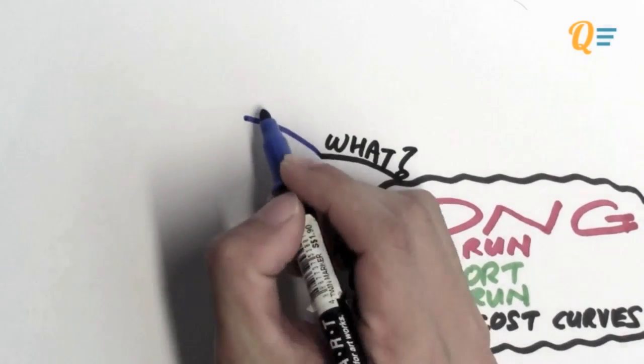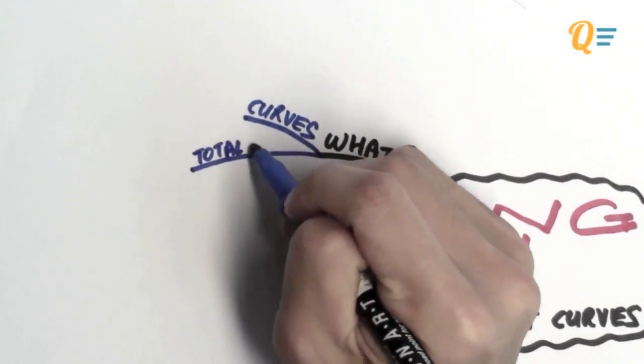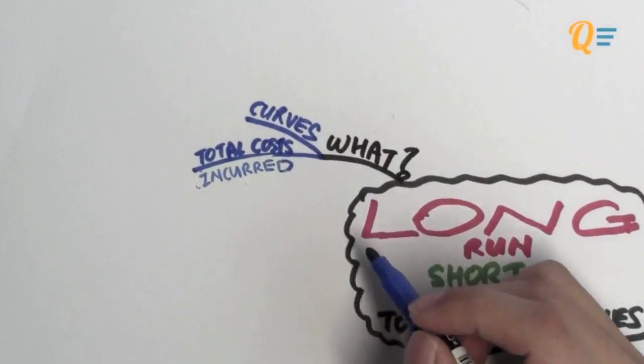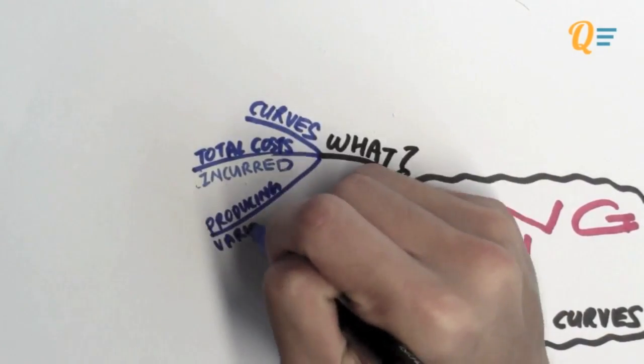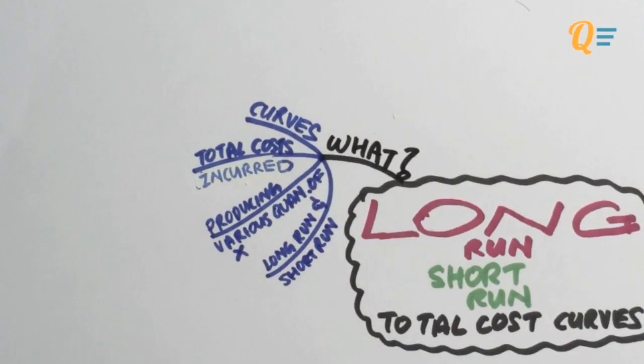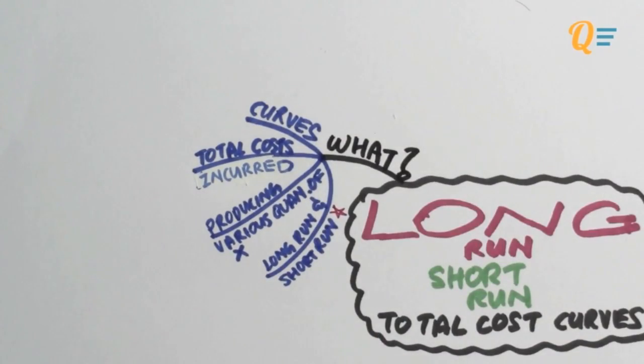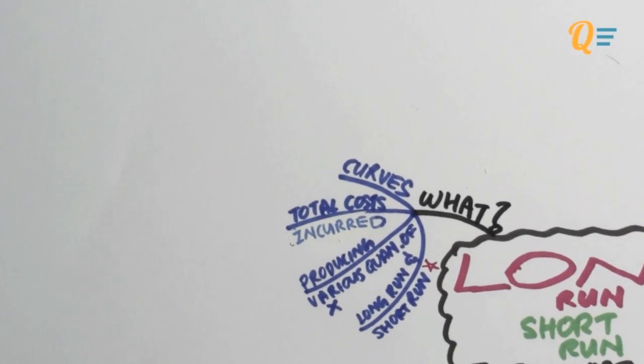What are total cost curves? They're simply curves that display all the total costs that a firm or business can incur when they produce various quantities of X in the long run as well as in the short run. Now there will be bound to be some confusion between what it means by the long run as well as a short run, so we're going to go through this in a little bit. We're going to start with what the curves look like first.